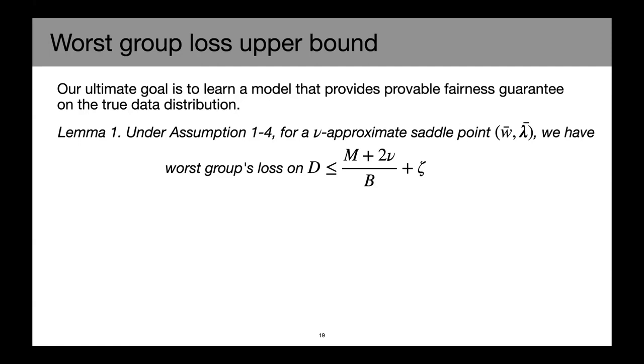We also have a fairness guarantee with respect to our training objective. Suppose the loss is upper bounded by some constant M, we show that for a nu approximate saddle point, we have the worst group's loss on the actual data set D is upper bounded by this term on the right hand side, M plus 2 nu over B plus zeta. So from this upper bound, we can see there are two ways we can restrict the worst group loss. We can either make B larger, which is the regularization strength, or we can train the model for long enough so that this nu is small.